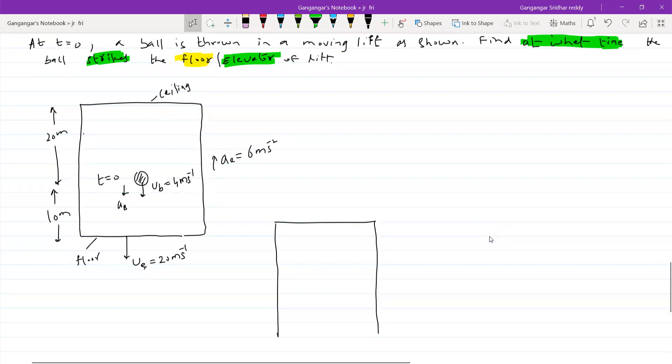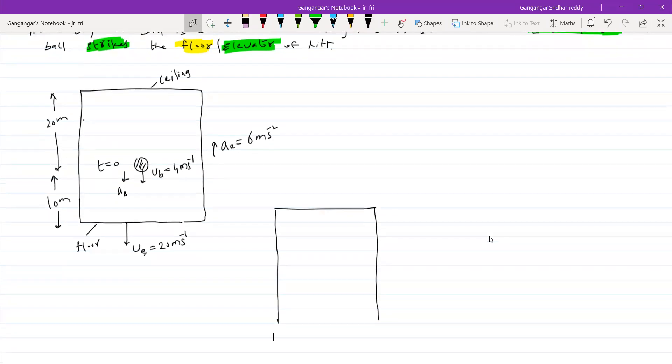Let the ball come and strike the elevator. Let the velocity of elevator be, we don't know elevator velocity also. We are just assuming things. So this will finally come and strike the floor. This is t equals 0. This happens after some time t.